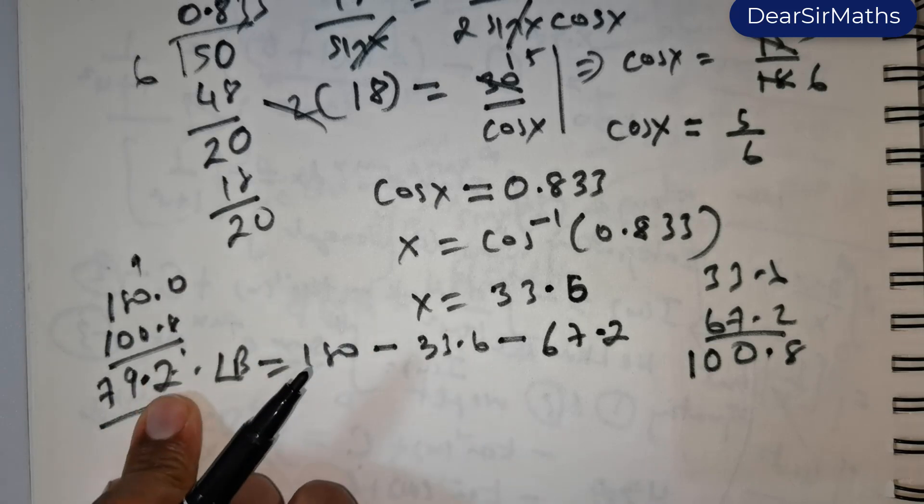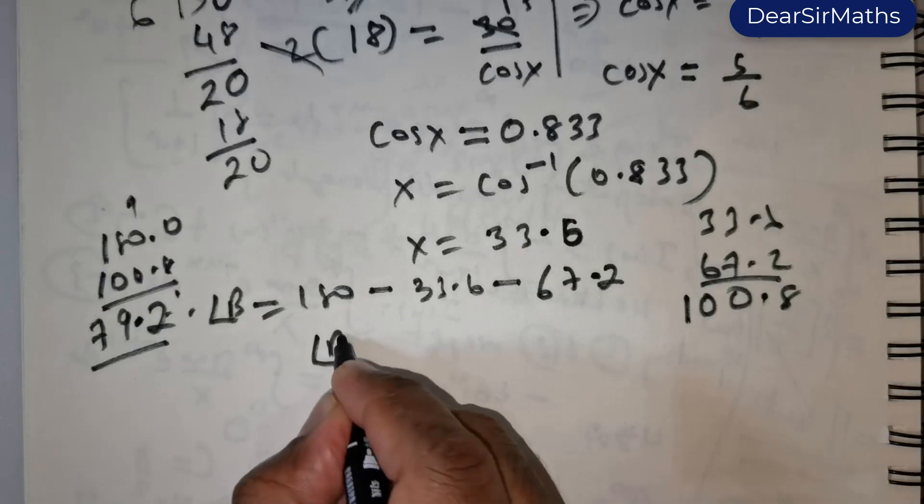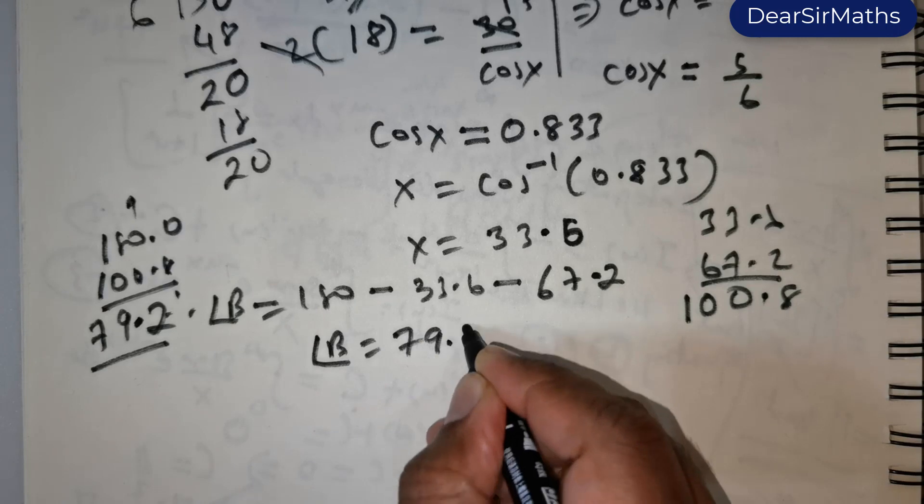So the angle that we have got is 79.2. Angle B is 79.2.